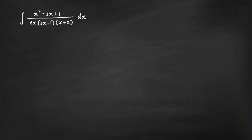Next integral. Pause this video if you want to try this out first. We want to integrate x squared minus 3x plus 1 all over 2x times the quantity 3x minus 1 times the quantity x plus 2. We again have distinct linear factors: 2x, 3x minus 1, and x plus 2, so we can use the cover-up technique.